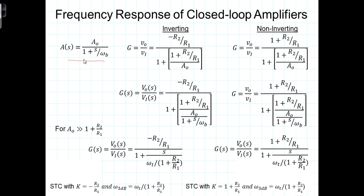We saw that A of S could be put into this form where omega sub B was the cutoff frequency. That cutoff frequency, omega sub B, is in radians per second, and the cutoff frequency F sub B, which is in hertz, will be down around 10 hertz or 10 cycles per second.